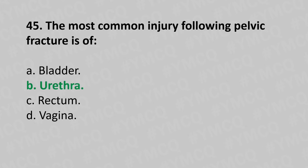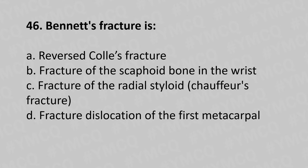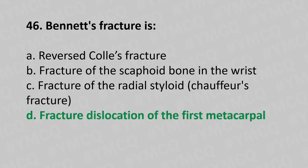Moving to our 46th question: Bennett's fracture is option A reverse Colles' fracture, option B fracture of the scaphoid bone in the wrist, option C fracture of the radial styloid or Chauffeur's fracture, option D fracture dislocation of the first metacarpal. The answer is option D fracture dislocation of the first metacarpal.